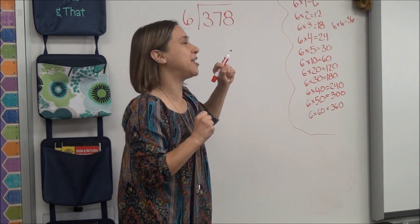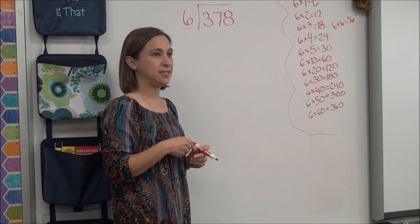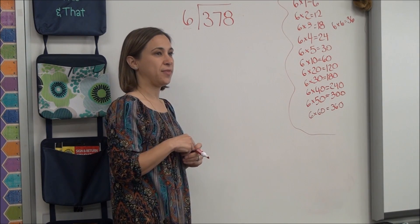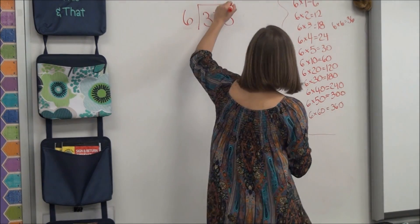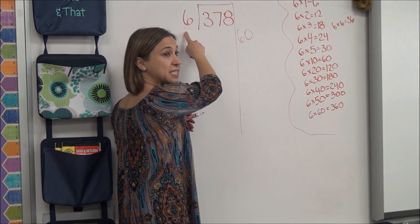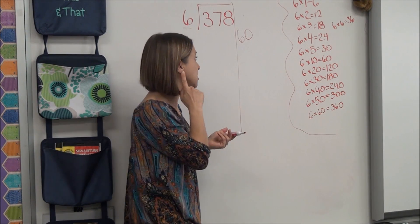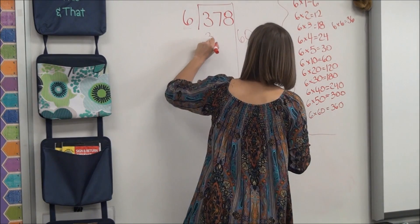How many times do I definitely know I can take 6 out of 378? Yes, Danielle. I can definitely take it out 60 times. All right, because 60 sixes is how much? 360. 60 sixes is how much? 360. 360.